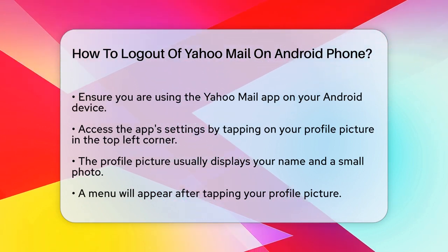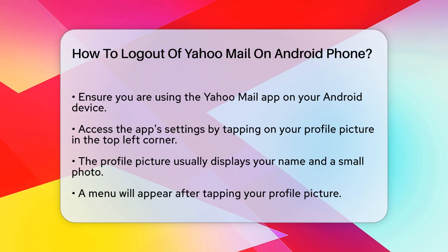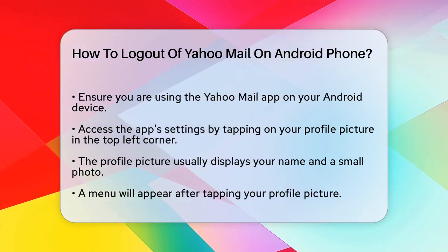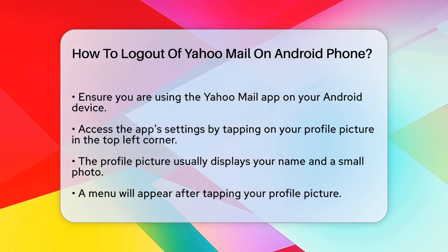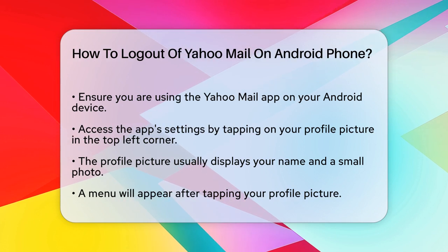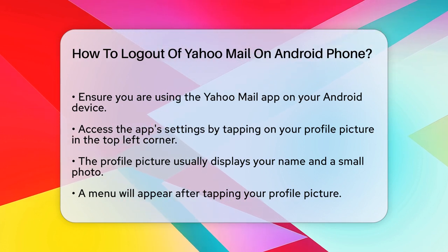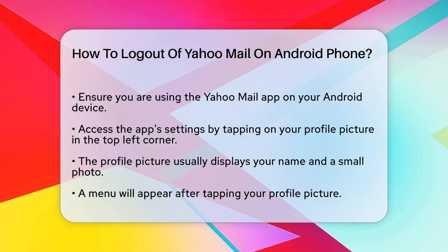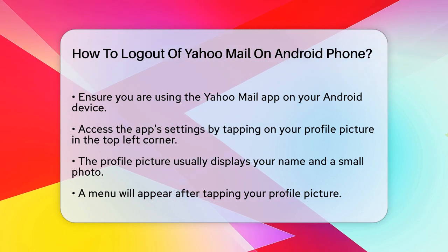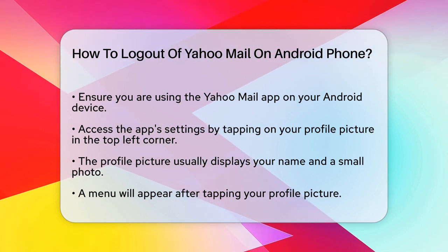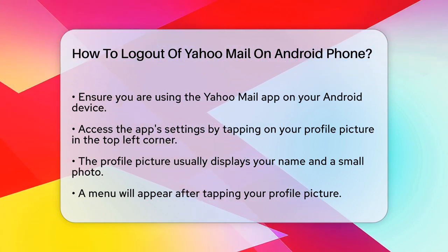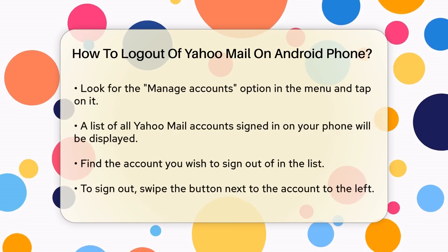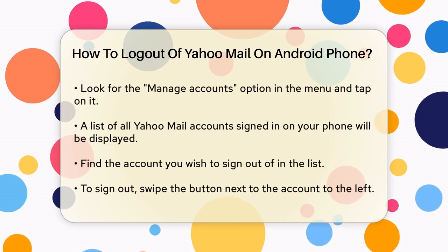First, make sure you're using the Yahoo Mail app on your Android device. To sign out, you'll need to access the app's settings. Tap on your account's profile picture located at the top left corner of the screen. This is usually an icon with your name and a small photo of you, found on the main screen where you see your inbox and other folders.